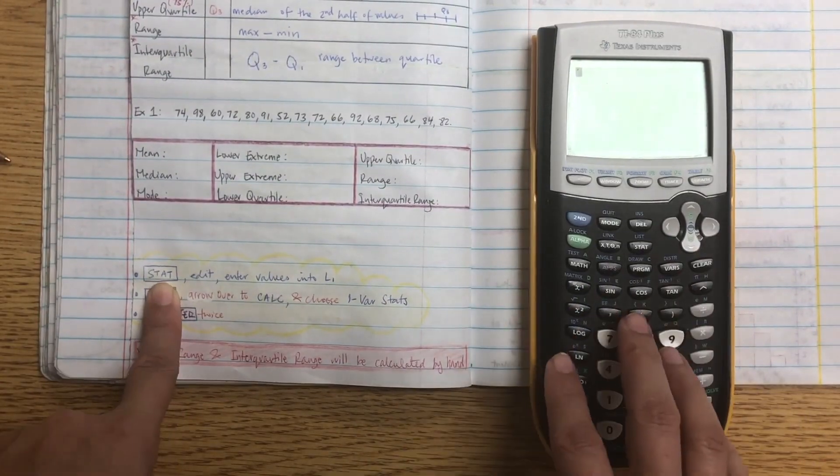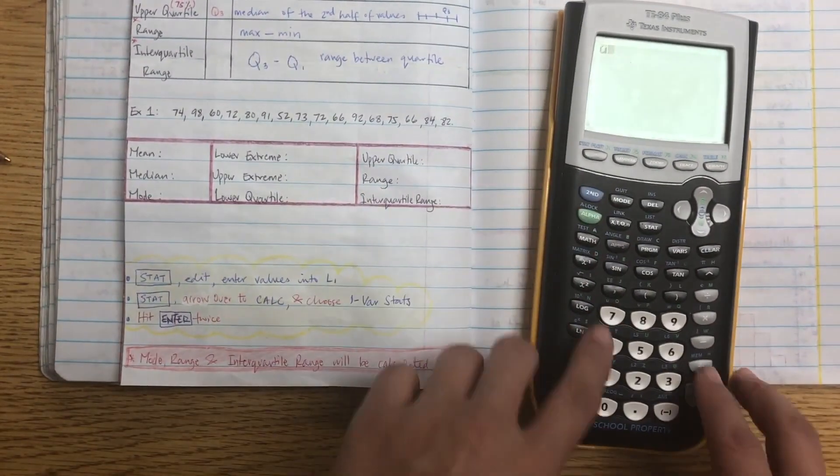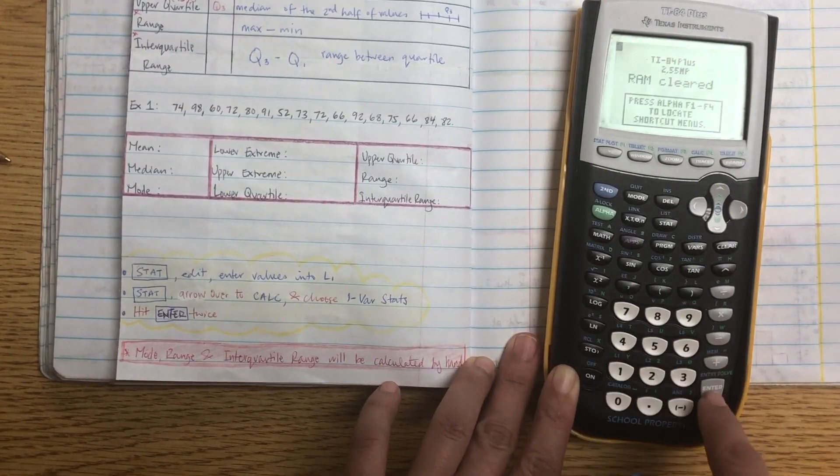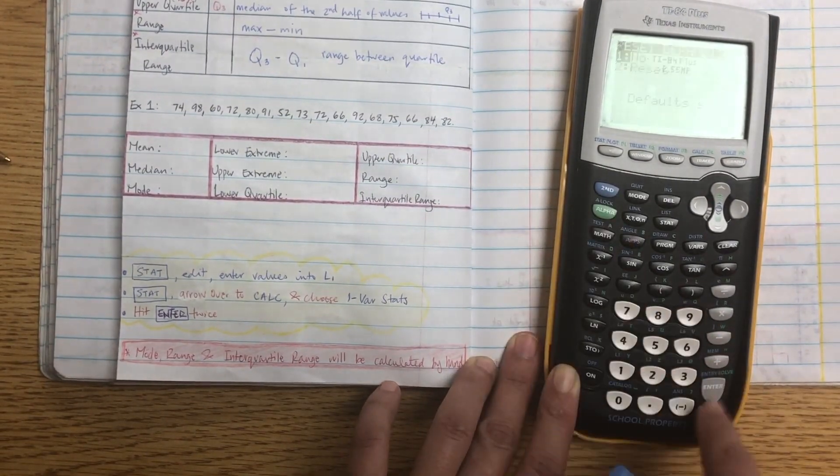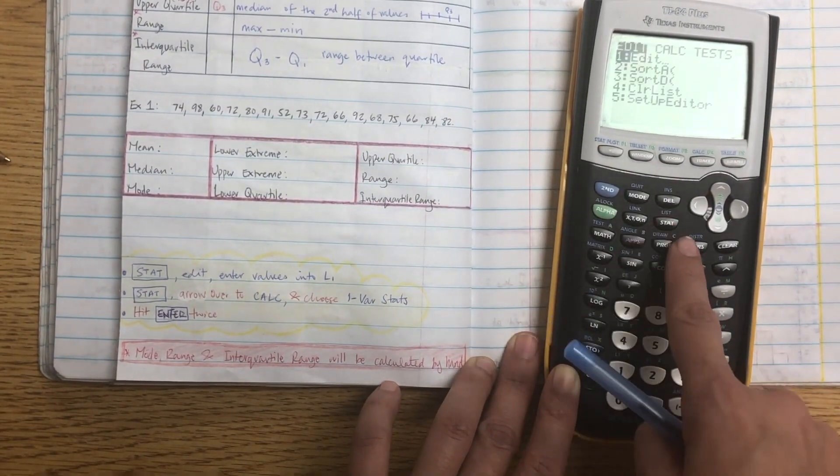So remember you have to press 2nd, plus, 7-1-2, then 2nd plus, 7-2-2, and then stat, 5, enter.